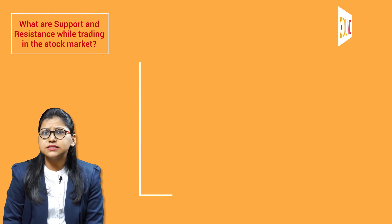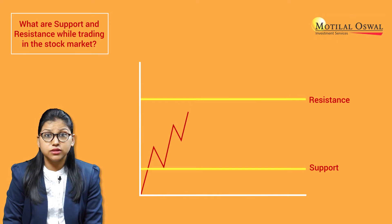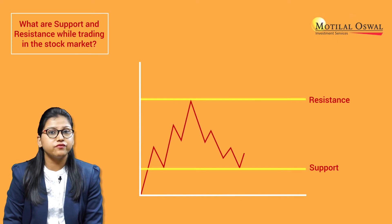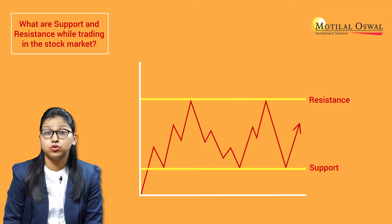Resistance and support are the psychological levels on the chart from where the prices tend to bounce back more than two to three times.